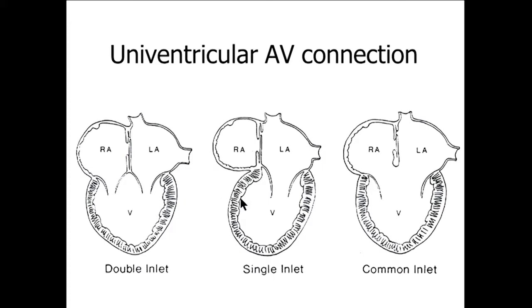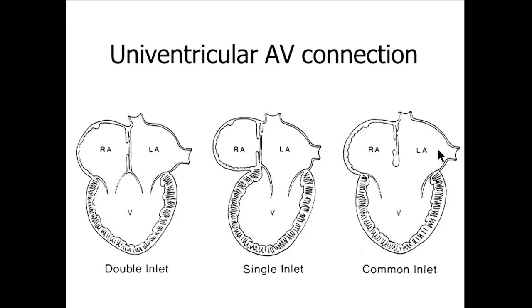This figure shows the pattern of univentricular AV connection. Both atria join to one dominant ventricle — this connection is double inlet ventricle. Another situation is total absence of the right AV connection, where there is no connection of the right atrium to the ventricular mass, and the left atrium joins to the main ventricle. As long as the entire AV connection is connected to the same ventricle, this is univentricular AV connection.